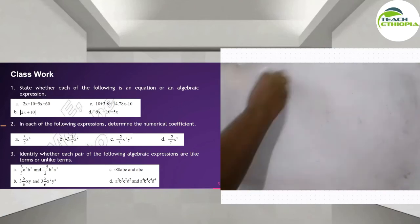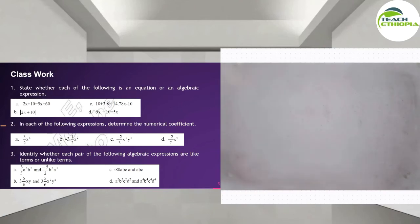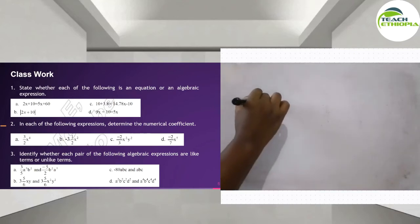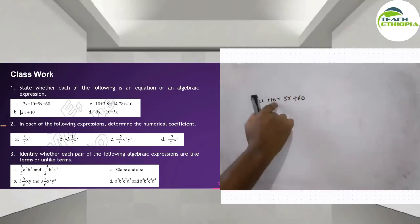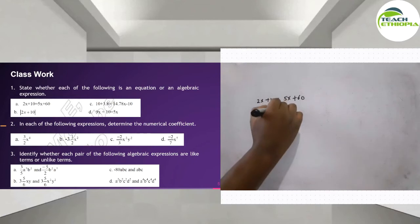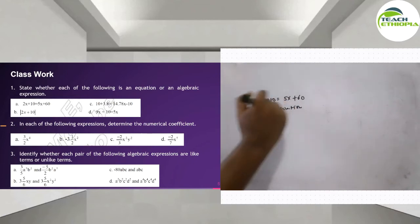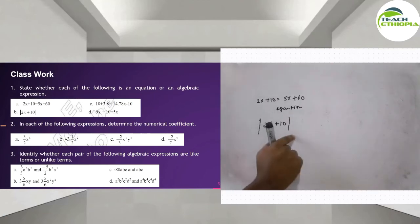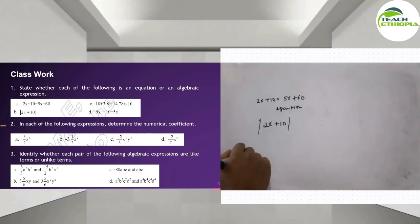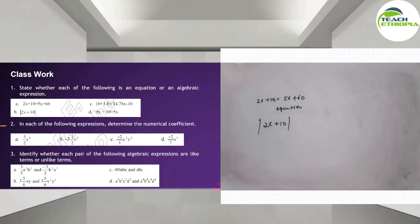Okay, let's do classwork. Question number one: state whether each of the following is an equation or an algebraic expression. The first, (a): 2x plus 10 equals 5x plus 60 — this is joined by an equal sign, so this is an equation. (b): the absolute value of 2x plus 10 — this is an expression because there is no equal sign.